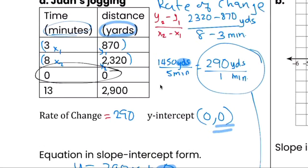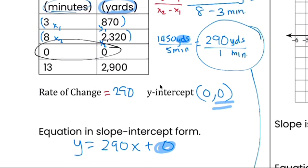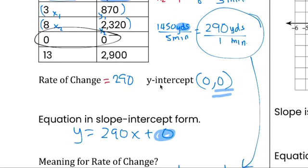So it's (0,0). The equation in slope-intercept form is y equals mx plus b. b here is zero, the slope, the rate of change is 290, right here, so you put it in there.